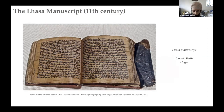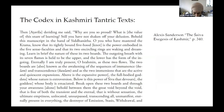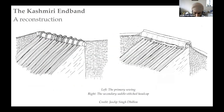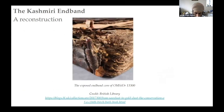Whereas end band structures in other bookbinding traditions seem to derive from textile finishing techniques, the Kashmiri end band possibly seems to derive more from leatherworking techniques. The diagram shows the structure in more detail. The primary sewing consists of helical loops going into each gathering, and these loops hold down a wooden core formed of a round cylindrical shape. The wooden core itself may be wrapped in leather, held in position by an additional length of tightly wound cord. This was found after seeing an image of a manuscript which underwent conservation treatment in the British Library, which had an exposed end band core due to damage over time.